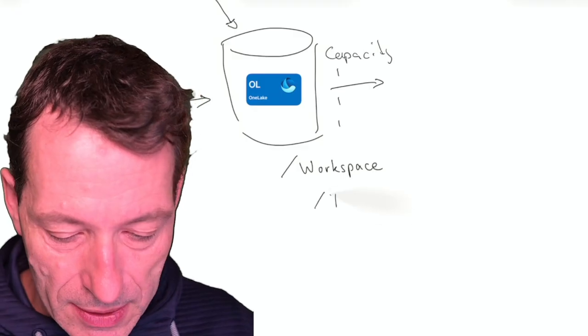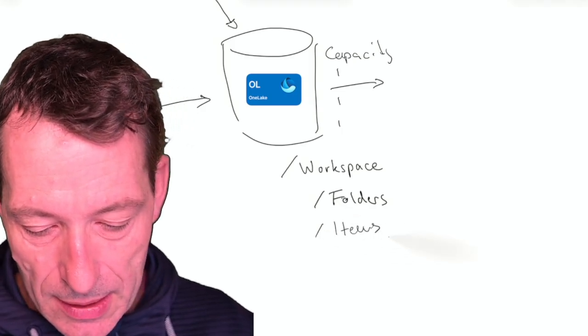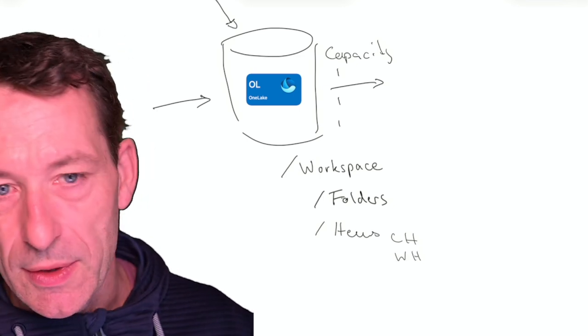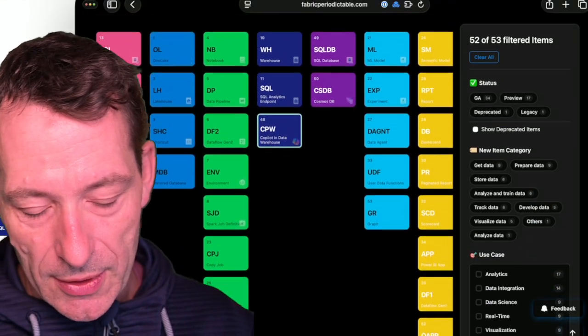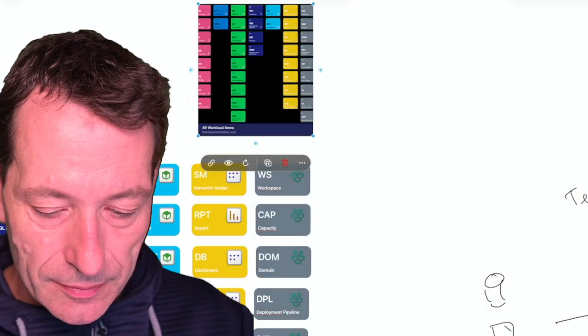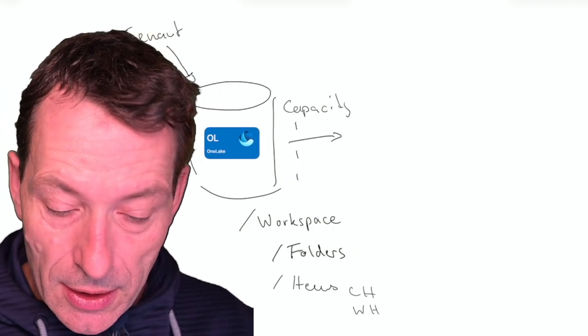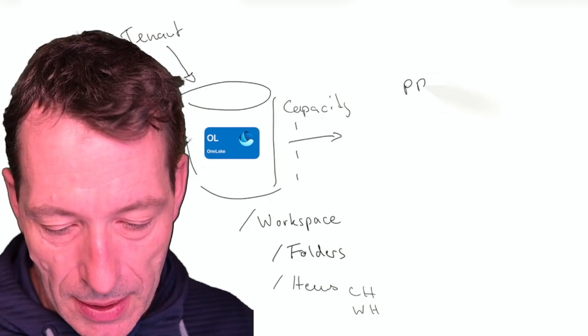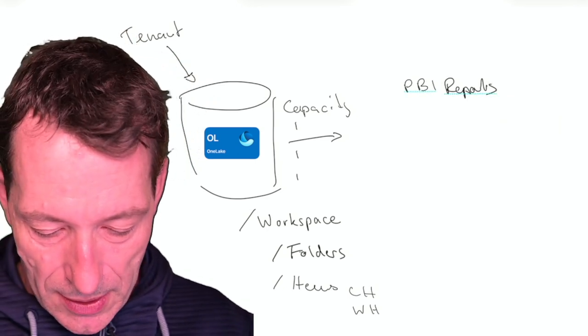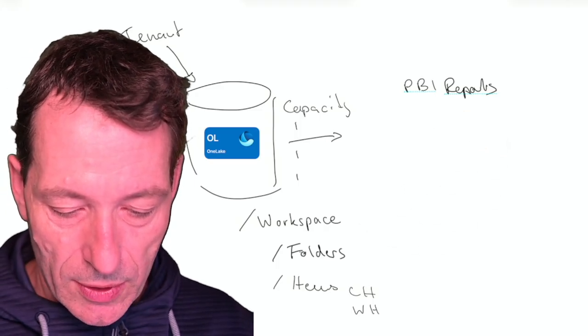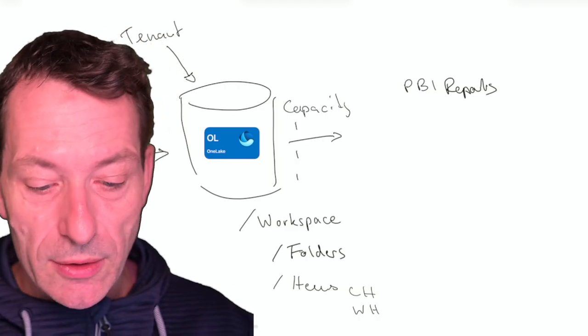Inside of a workspace, you have all your fabric artifacts like lake houses or warehouses and so on. But you can also have folders, subfolders in the workspace. Or you can have items like lake house, warehouse and everything else around these 50 items that you can see beautifully in this fabric periodic table. These are all items that you can have in a workspace or in a workspace folder. So this is a logical structure. So all items that we would draw on the right side to consume data from OneLake, like most prominent Power BI reports, logically sit in this workspace. So we can draw a dotted line from here over to that workspace.